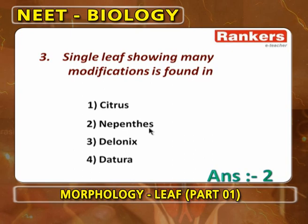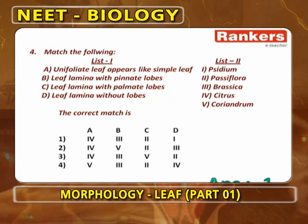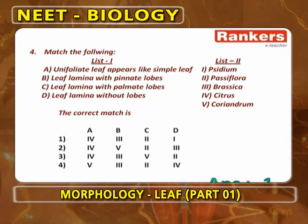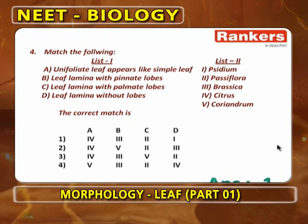Answer is Nepenthes, not Citrus, Delonix, or Althaea. Next, this is a matching question. Unifoliate leaf appearing like a simple leaf is Citrus, because here only one leaflet is present at the tip of the petiole and the petiole is winged. So unifoliate compound leaf with winged petiole is Citrus.